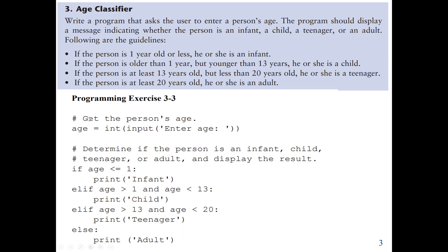We assign the age as an integer to a variable named age. Now we determine if the age entered corresponds to infant, child, teenager, or adult, then display the result with a print statement. First, we enter the age. If the age is less than or equal to 1, then we print infant. And if age is greater than 1 and age is less than 13, we print child.